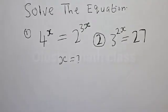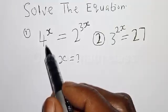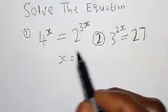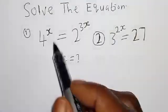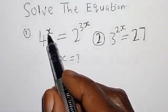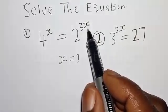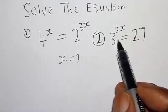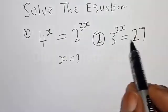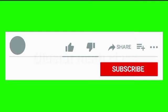Hi everyone, welcome to my class. In this class, we quickly want to find the value of s from these given exponential equations. The first is 4 raised to power s is equal to 2 raised to power 3s. The second one is 3 raised to power 2s is equal to 27.